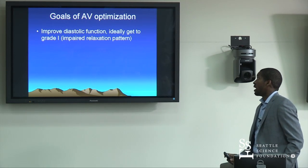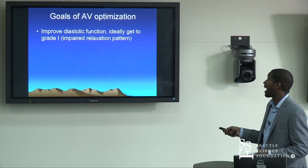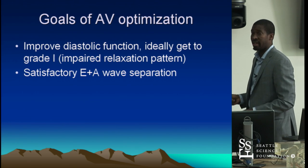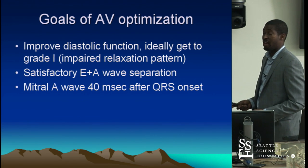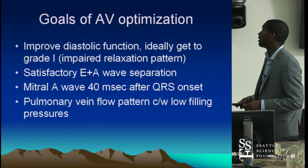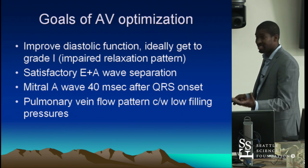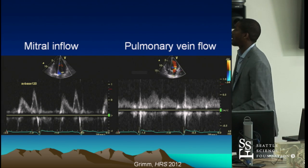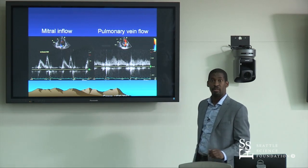Goals of AV optimization: done typically intraoperatively or post-op day one, to improve diastolic function and ideally achieve a grade 1 filling pattern on echo. You want to see a clear E wave and A wave, not truncated, not superimposed. Cleveland Clinic timed the A wave relative to QRS onset to avoid a truncated A wave where the atrium contracts against a closed mitral or tricuspid valve. They even looked at pulmonary vein inflow patterns — the S and D wave on echo — as an optimal pattern.